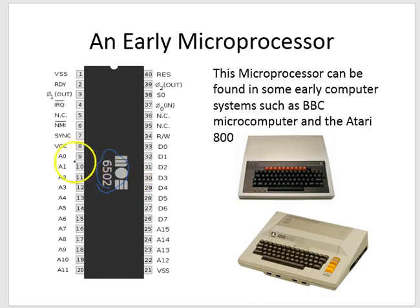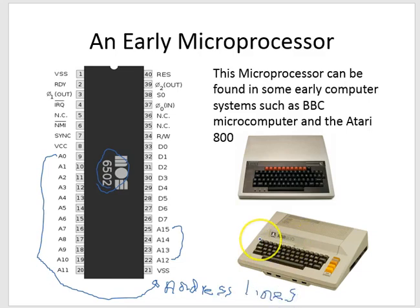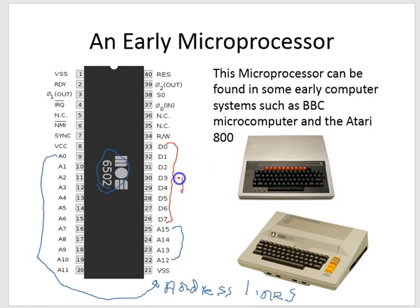What I want you to see first of all are the address lines. In this case we've got A0 right round to A15 — that's a 16-bit address bus. And then we've got the 8-bit data bus, from D0 down to D7.